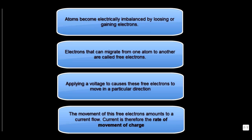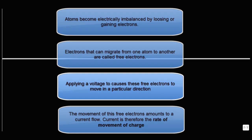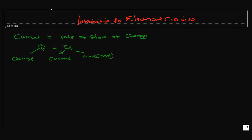Another way to put this is that current is the rate of movement of charge — essentially the quantity of electrical charge. So current is the rate of flow of charge. The symbol for charge is Q, the symbol for current is I, and time is T.